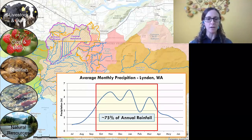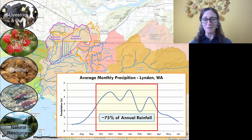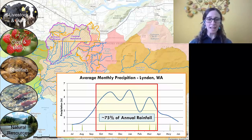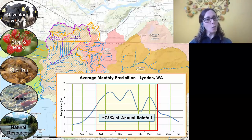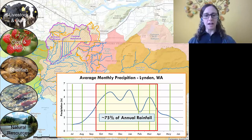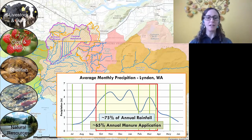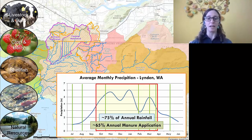Our primary average monthly precipitation shows that about 75 percent of rainfall falls between the beginning of October through about mid-April. During that time, looking at when manure application — our primary use, along with fertilizer for early-season crops and berries — occurs, about 65 percent of that happens during that same high-rainfall period.